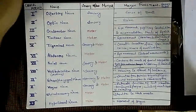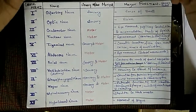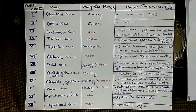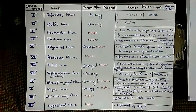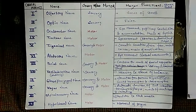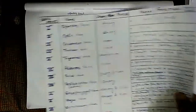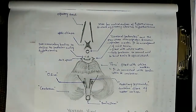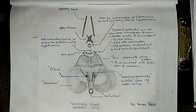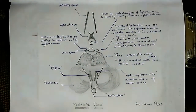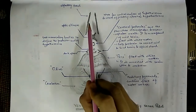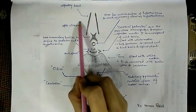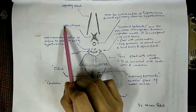Before discussing the origin of cranial nerves, we need to understand some brain structures that help us identify where each cranial nerve arises. Looking at a ventral view of the brain — a handmade diagram — we can see a paired structure called the olfactory tract, and just below it the optic chiasm, where the optic nerve originates.